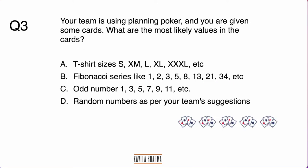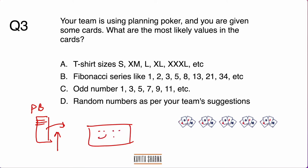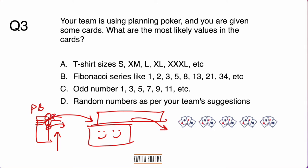Planning poker is a technique agile teams use. There is a product backlog and a release planning or scrum planning meeting. The agile team selects items they can release in the next sprint. They look at high-priority items at the top of the product backlog and estimate how much effort is needed for development of each item, based on the velocity of the team.